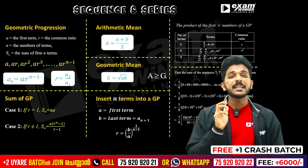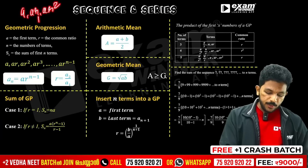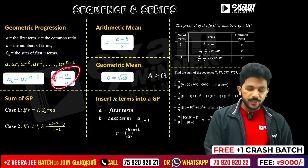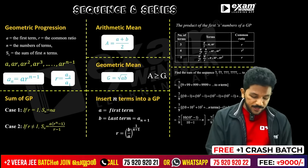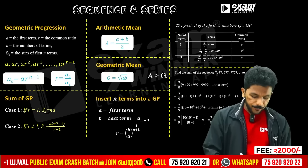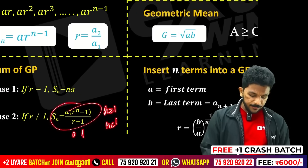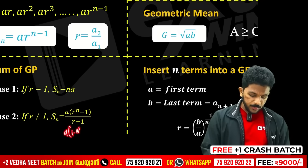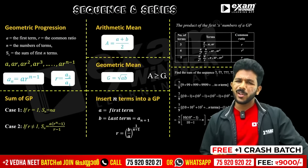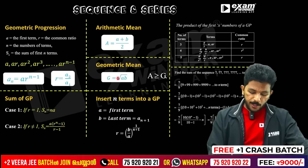This is sequence and series. In sequence and series, we have GP — geometric progression. The first term is a, common ratio is r. You can use a formula for this: take the ratio to find the sum — the formula is a times (1 minus r raised to n) divided by (1 minus r). Arithmetic mean is (a plus b) by 2. Geometric mean is very important — root of the product of the two numbers, and it can be plus or minus.